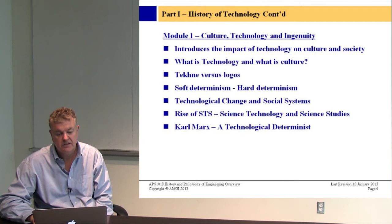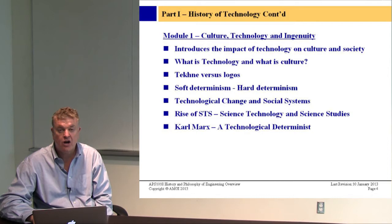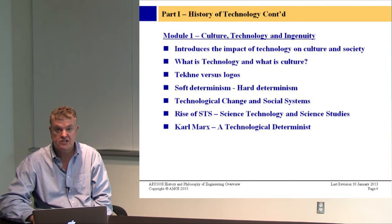Slide four, module one: culture and technology. What is technology and what is culture? We'll go back to Greek language — techni versus logos — the terminologies that make up the word technology, exploring what those mean. We'll discuss soft determinism and hard technological determinism, and explore Karl Marx as a technological determinist, then the rise of science and technology studies. Many major universities have a history and philosophy of technology and science department.